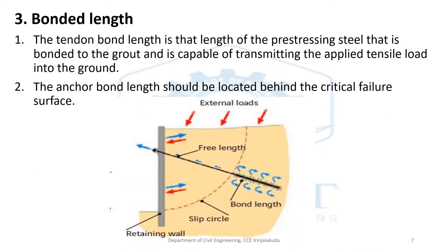The bonded length is a very important part of the anchor. The tendon bond length is that length of the pre-stressing steel that is bonded to the grout and is capable of transmitting the applied tensile load into the ground. It is the key part that transfers the whole force to the ground. The anchor bond length must be located behind the critical failure surface; if it is located above the critical failure surface, there is no use.